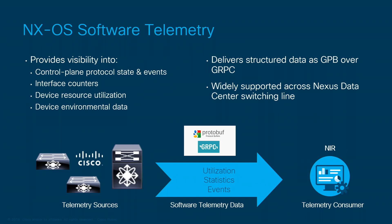Software telemetry gives you control plane protocol information, interface counters, resource utilization — how are my TCAMs looking, is the route table filling up, am I running out of hardware resources — as well as environmental data, delivered in structured format via Google Protobufs over gRPC. We open a persistent TCP session to the switch to transmit this software telemetry data. This is really the baseline for NX-OS devices; pretty much all current Nexus devices support streaming software telemetry.